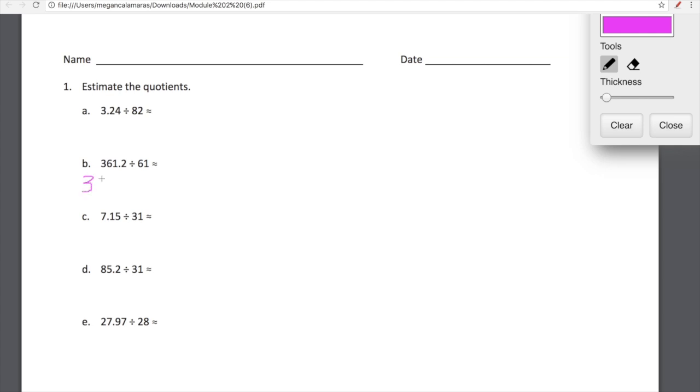Let's take a look at B. 361.2 divided by 61. I'm going to go ahead and round, as many of you I think would, I'm going to round 361.2 down to 360 and then I'm going to round 61 to 60. So we have 360 divided by 60. Let's decompose 60 so that we can really divide this very quickly in our heads.